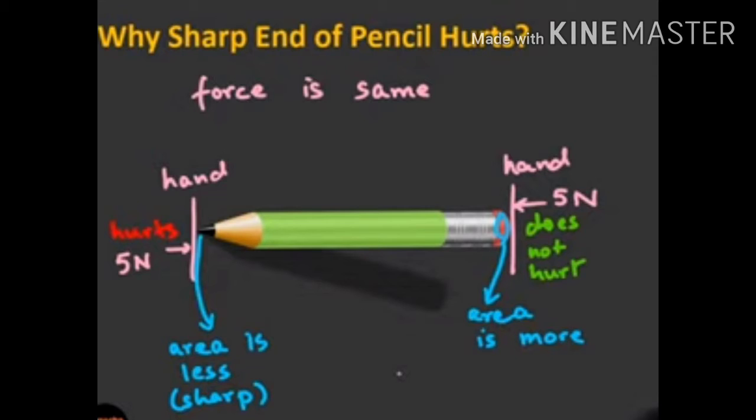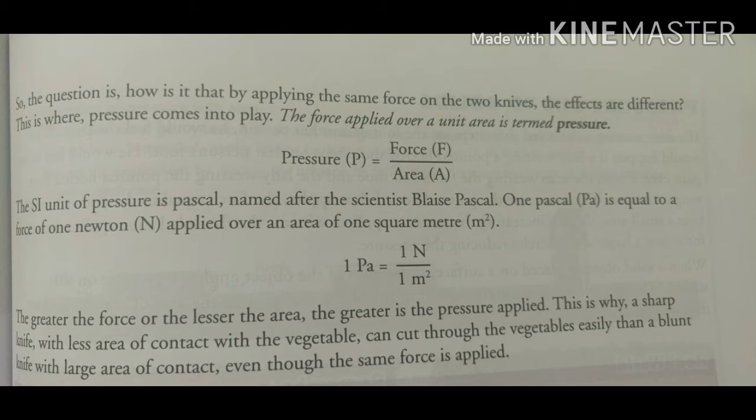This means the pointed end, the area is less, and at the blunt end, area is more. So what does this show? If force is same, if you are applying same force, but pressure depends upon area. So we can say pressure comes into play. So what is pressure?